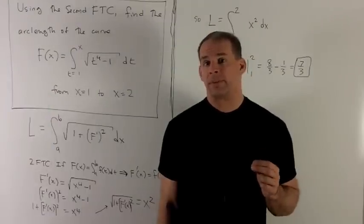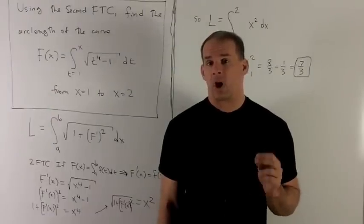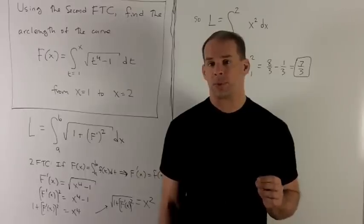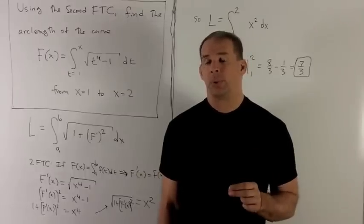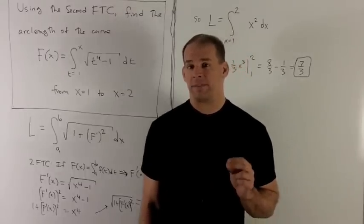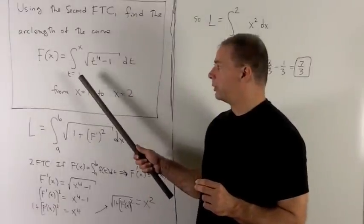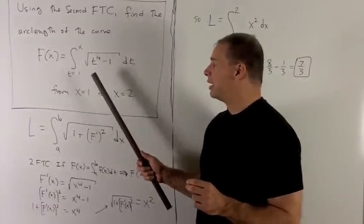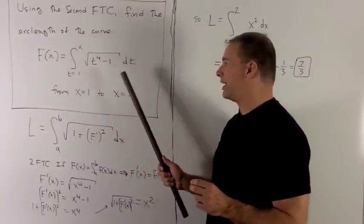Using the second fundamental theorem of calculus, find the arc length of the curve from x equals 1 to 2 of the function f of x equal to the integral from 1 to x of radical t to the 4th minus 1 dt.